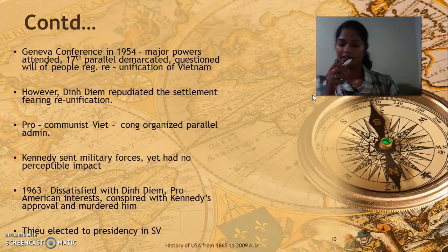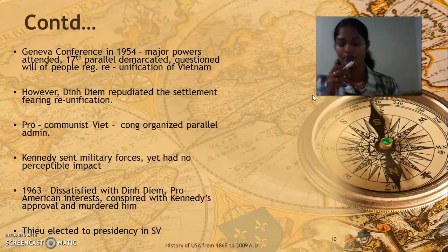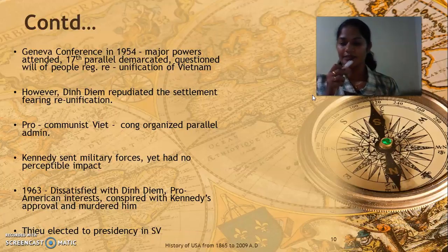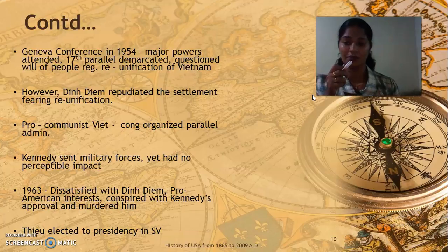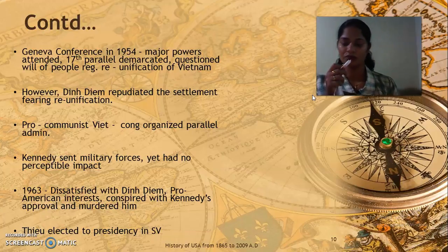When Vietnam was divided, there was an urge for compromise because of political chaos. A conference was arranged in Geneva in 1954, attended by major delegates including America, Russia, and France. Two points were discussed: first, demarcating the territorial boundary called the 17th parallel; and second, questioning the will of the people — whether the Vietnamese wanted to remain divided or desired reunification.